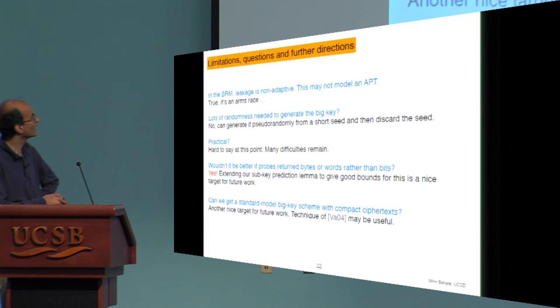People ask also about whether you can make it more efficient by having probes return words rather than bits, and it's definitely so. It'd be nice to see a bound proven for that. On the more theoretical side, one might try to compact ciphertext in the absence of a random oracle as well. Okay, that's it.